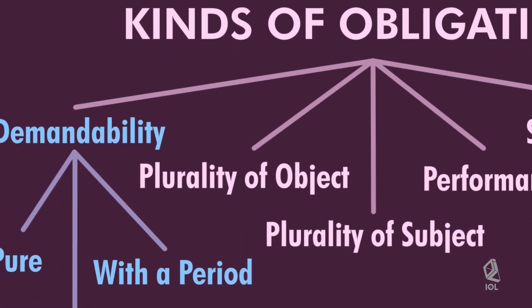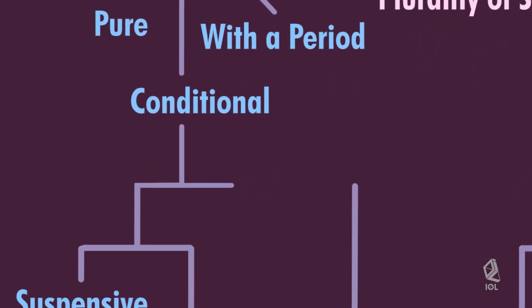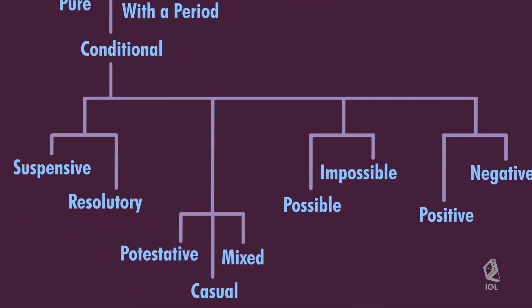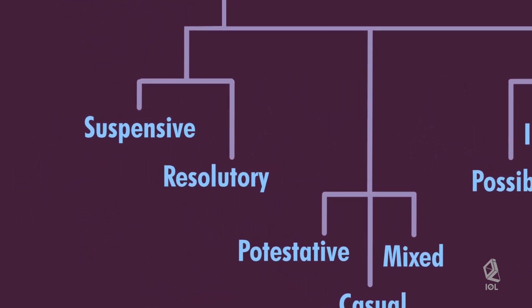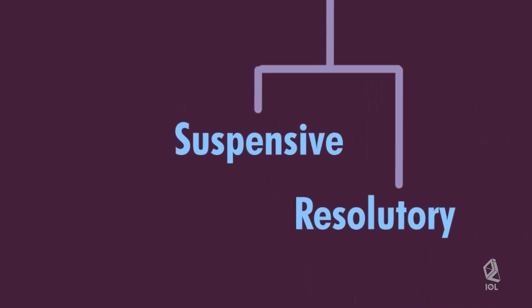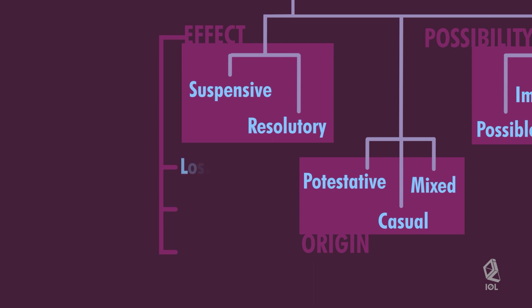In our previous video, we already started on the kinds of conditional obligations. Let's learn more about them. The question that we were not able to answer last time is: what happens when there is a loss, deterioration, or improvement of the determinate thing before the fulfillment of the suspensive or resolutory condition?